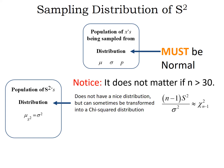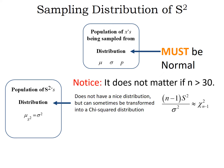Now I want you to notice: sample size being more than 30 does not matter. The only thing that matters is that the population being sampled from has to be normal. If the population is not normal and your sample size is 8 billion, x-bar behaves nicely, but s-squared does not.